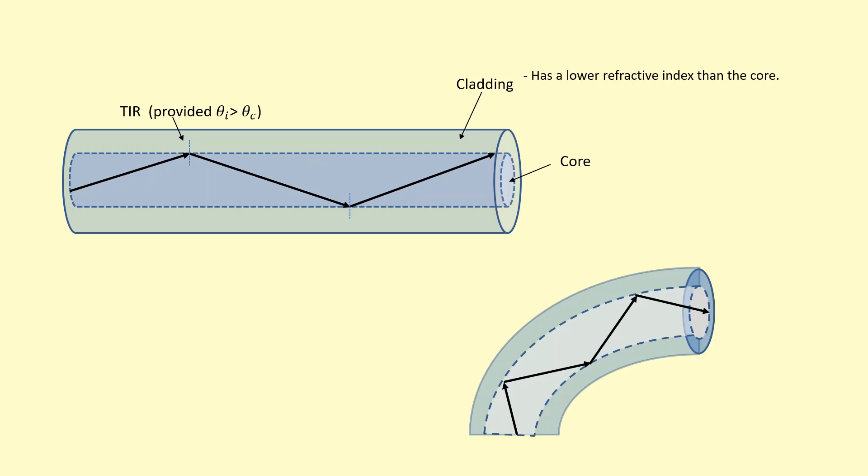The cladding also protects the core from being scratched or damaged. And also the cladding prevents crossover of signals. So if two optical fibers are touching, if they didn't have a cladding, signals from one would transfer to the other. So the cladding prevents this from happening.